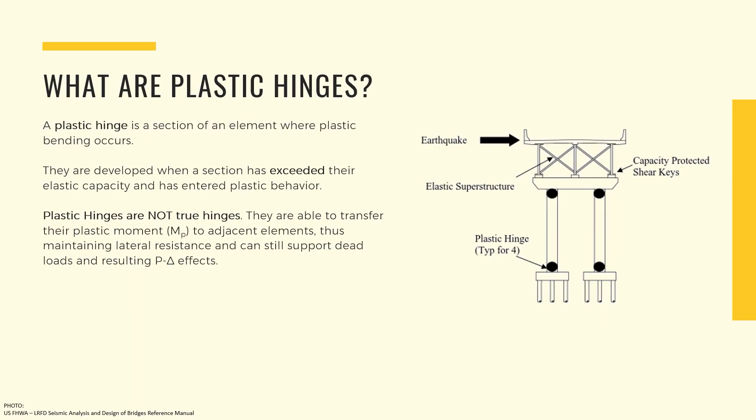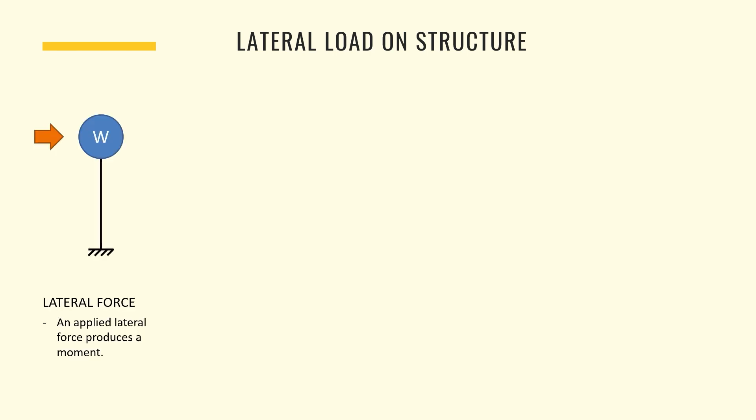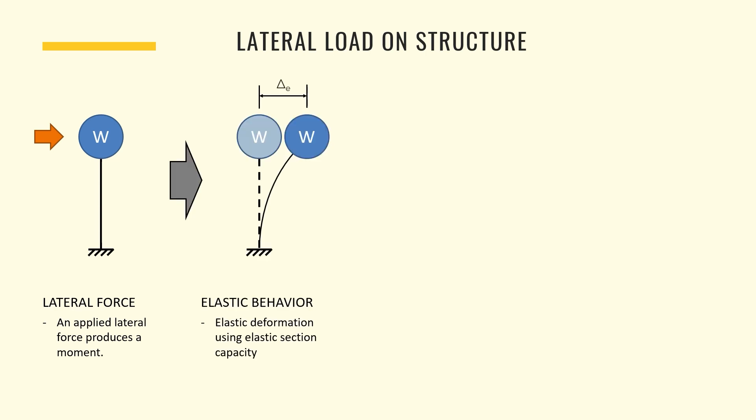Let's talk about plastic hinging. What are plastic hinges? A plastic hinge is a section of an element where plastic bending occurs, which is developed when forces have surpassed the elastic capacity of the section. Note that plastic hinges are not true hinges. If we go back to our basic structural classes, we can remember that hinges will not transmit moments, which is not the case for plastic hinges. Plastic hinges will still have reasonable lateral resistance but will continue to deform without any additional loads. To have a better understanding of plastic hinges, let's consider this simple SDOF model.